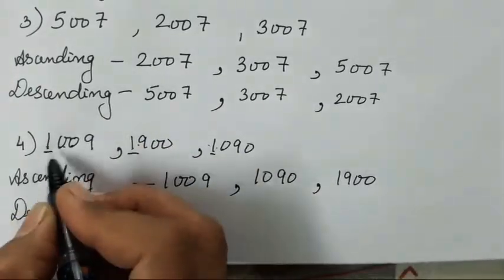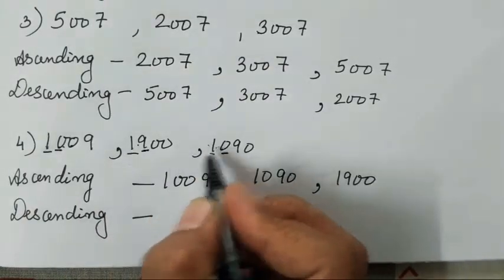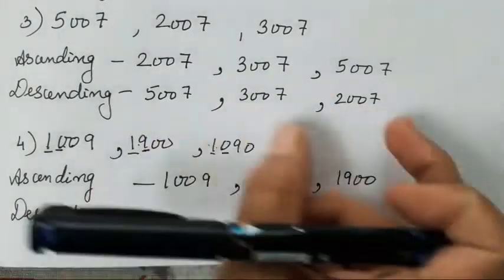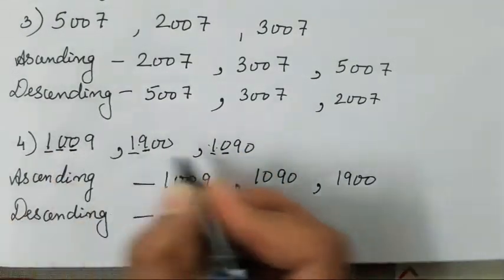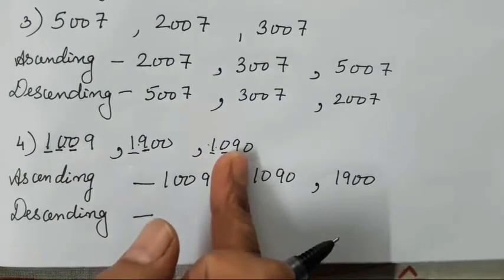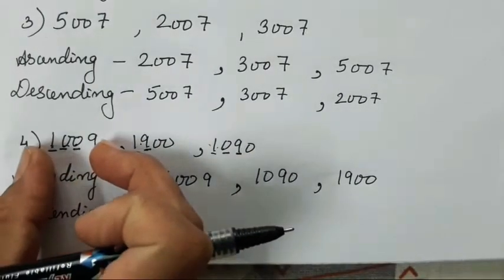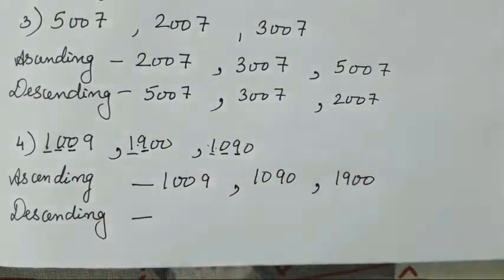1009 will come first, and then this number will come. Because we have decided this number is bigger in the very first calculation. 1, 1, 1. Then 0, 9, 0. So 9 is greater than 0. That is why we separated it. Then comparison we did in both. Next third place was 0 and 9. So 0 is smaller than 9. That is why this number has become the smallest, this in the second place, this in the third place.